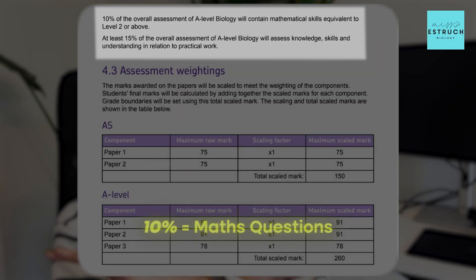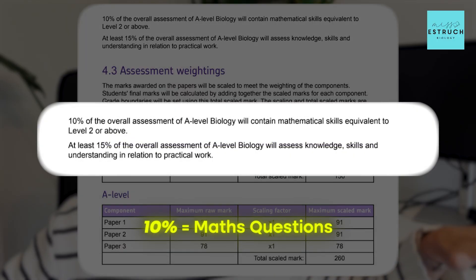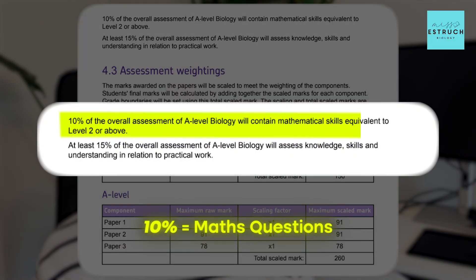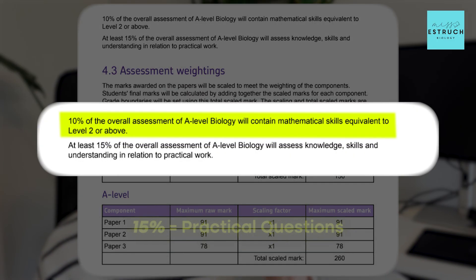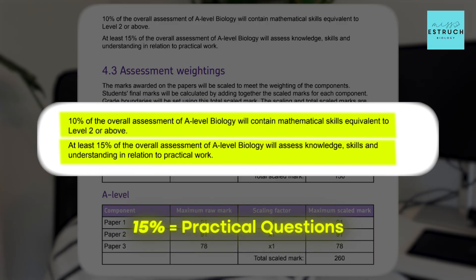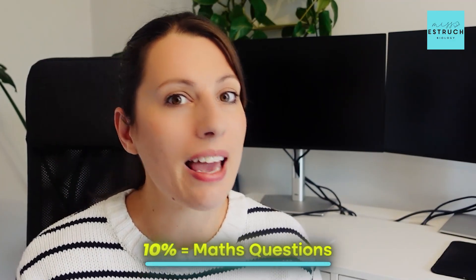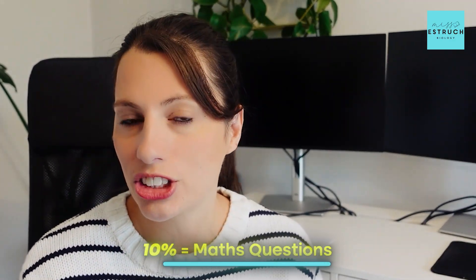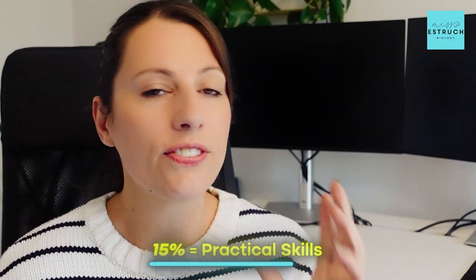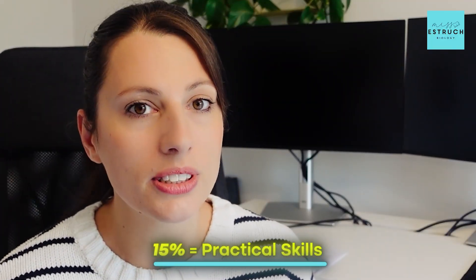Ten percent of the questions across the entire A-level will be maths questions, and a minimum of 15% will be practical questions. So when you're revising, you need to spend at least 10% of your time doing maths questions and at least 15% of your time doing practical skills if you want to get the maximum amount of marks across your papers.